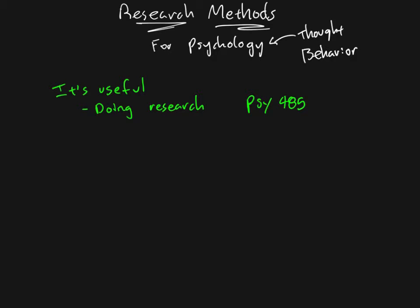Having research experience is really useful, especially if you know your research methods well, do a great job, and impress the professor — they're more likely to write you an awesome letter of recommendation for graduate school. Another reason research methods are useful is that if you can read and understand scientific research, you rely less on others. You're able to interpret research for yourself and decide whether a particular finding is valid, rather than relying on friends or the news media. Journalists often have to summarize what a study means and in doing so they often get it wrong or exaggerate.